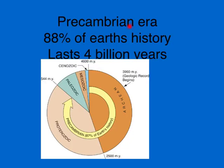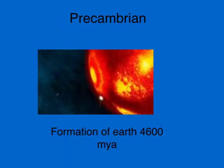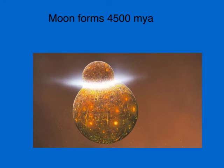The pre-Cambrian era is most of Earth's history — 88% of Earth's history occurred from 4.6 billion years ago and lasted 4 billion years. At the very beginning of the pre-Cambrian era, you have the formation of the Earth, 4,600 million years ago, when all of the matter and rocks aggregated into the Earth.